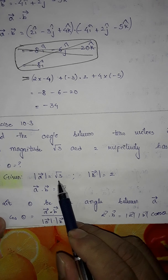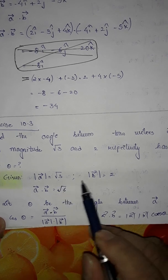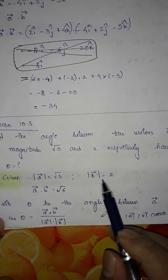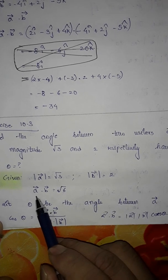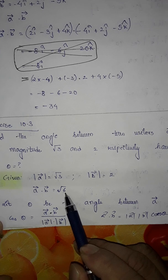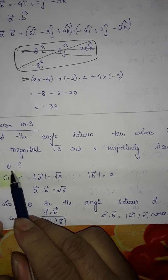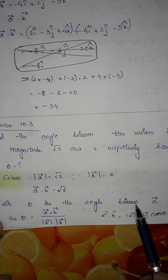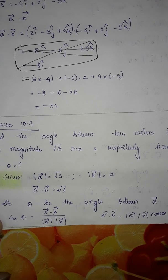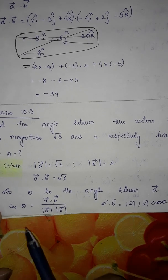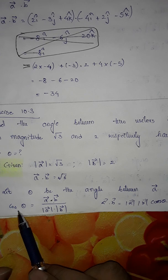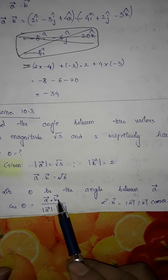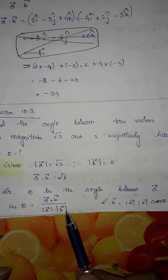Given: magnitude of a equal to √3, magnitude of b equal to 2, and a·b equal to √6. We have to find theta. Let theta be the angle between a and b. Therefore, use the formula: cos θ = a·b divided by magnitude of a times magnitude of b.